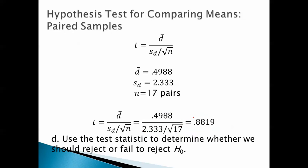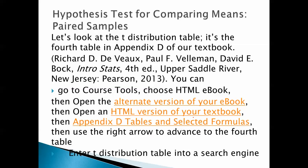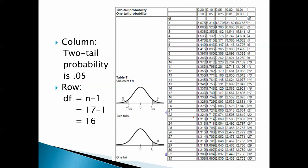Use the test statistic to determine whether we should reject or fail to reject H0. You know how to find the t-distribution table. You go to back of the book and you open it, or you can enter t-distribution table into a search engine, and you get something that looks like this. Now the column we want, we have a two-tail test, so we want two-tail probability, and we've got .05, so we want this middle column.